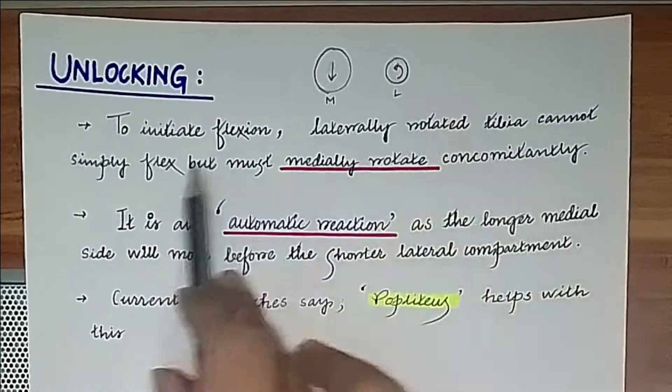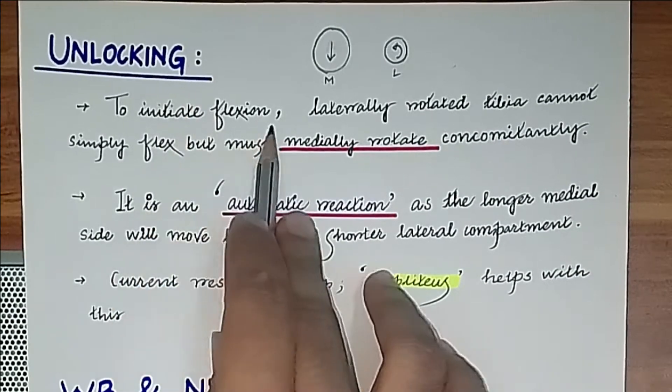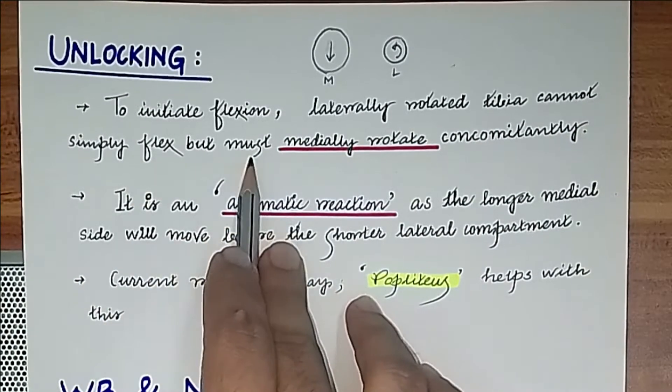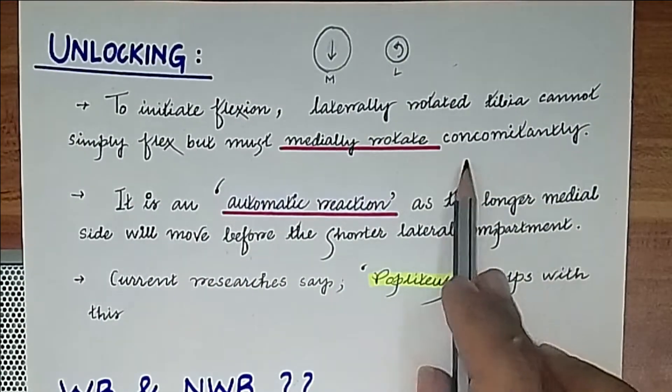When there is locking, there has to be unlocking. It starts with the initiation of flexion. To initiate flexion, the laterally rotated tibia cannot simply flex but must medially rotate concomitantly.